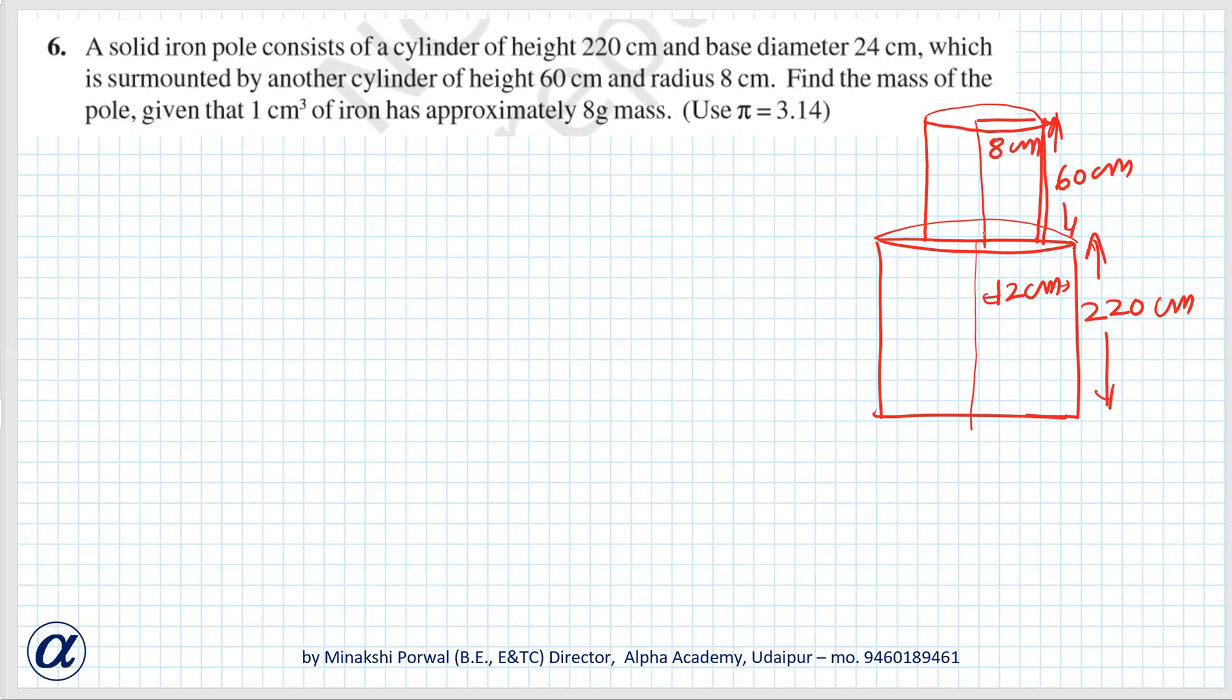Now find the mass of the pole given that 1 cm cube of iron has approximately 8 g mass. So why this relation is given, we have to find mass. 1 cm cube is 8 g mass. So first of all we will find the volume of this and then we will multiply it by 8 g.